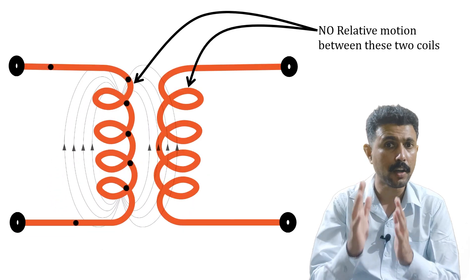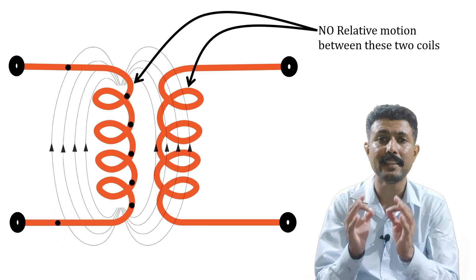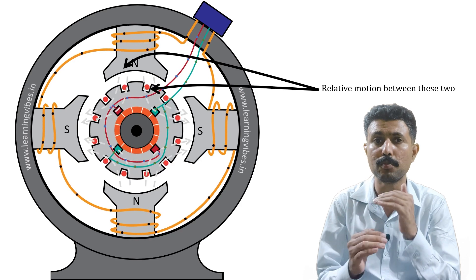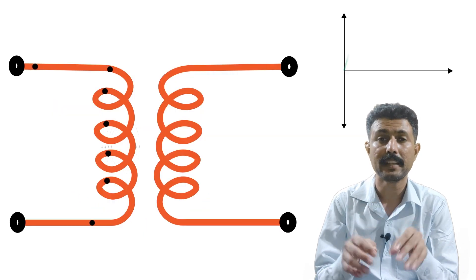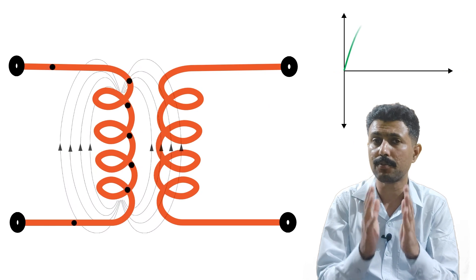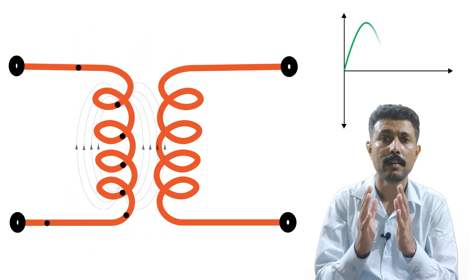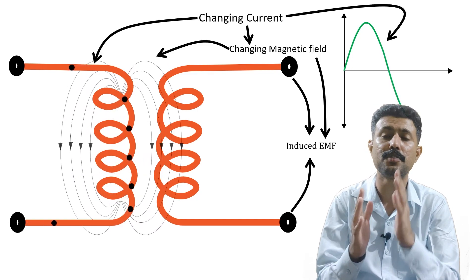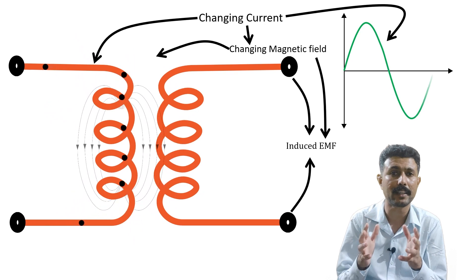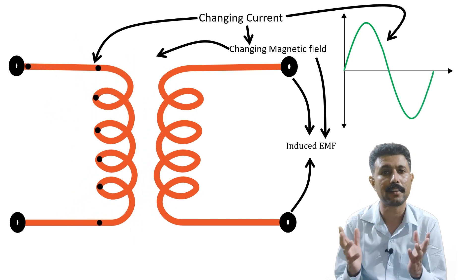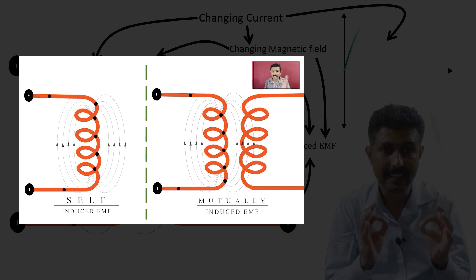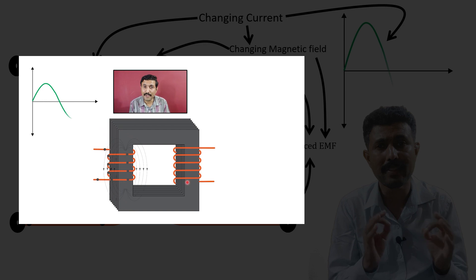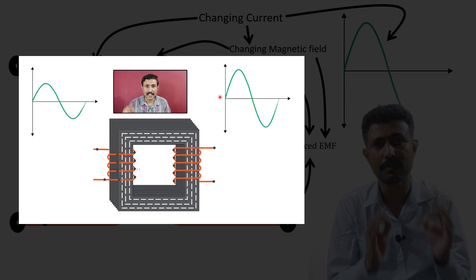In the case of a transformer, we cannot provide relative motion between the two coils. Relative motion is generally the case in generators, where there is relative motion between the armature and the rotor. So in a transformer we have only one choice: by changing the current we change the magnetic field, and by this changing magnetic field we can induce EMF in another coil.